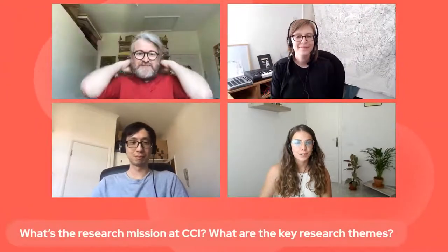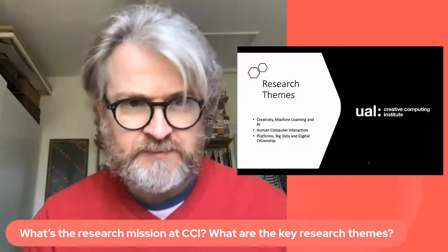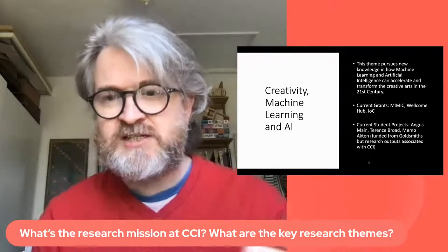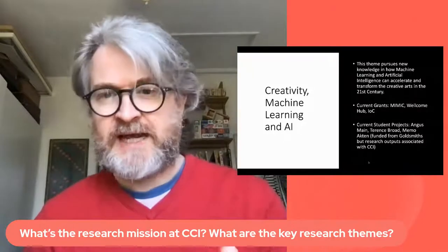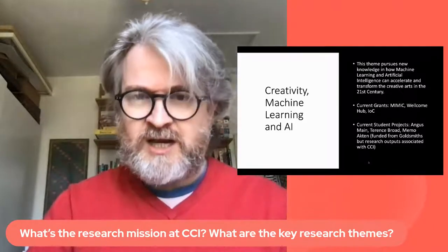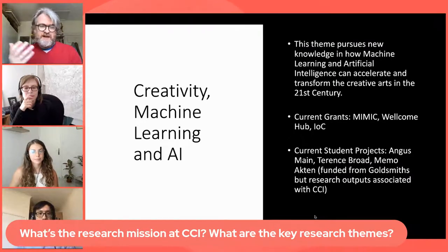What is the actual research mission at CCI and what are the key research themes? We have three research themes. The first is creativity, machine learning, and AI — pursuing new knowledge in how machine learning and artificial intelligence can accelerate and transform creative arts in the 21st century. That includes making technologies artists might want to use, seeing how artists use technologies, and there being a mutually beneficial relationship. We also ask how AI can support people with disabilities and improve access.